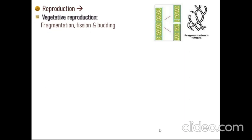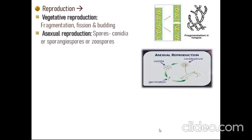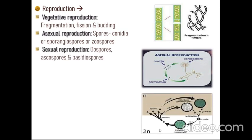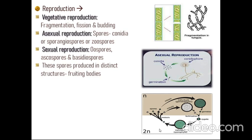Fungal reproduction is done by three kinds. First, vegetative reproduction, done by fragmentation, fission, and budding. Second, asexual reproduction, done mainly by sporangiospores or zoospores. Third, sexual reproduction is done by oospores, ascospores, and basidiospores. These spores are produced in distinct structures known as fruiting bodies.